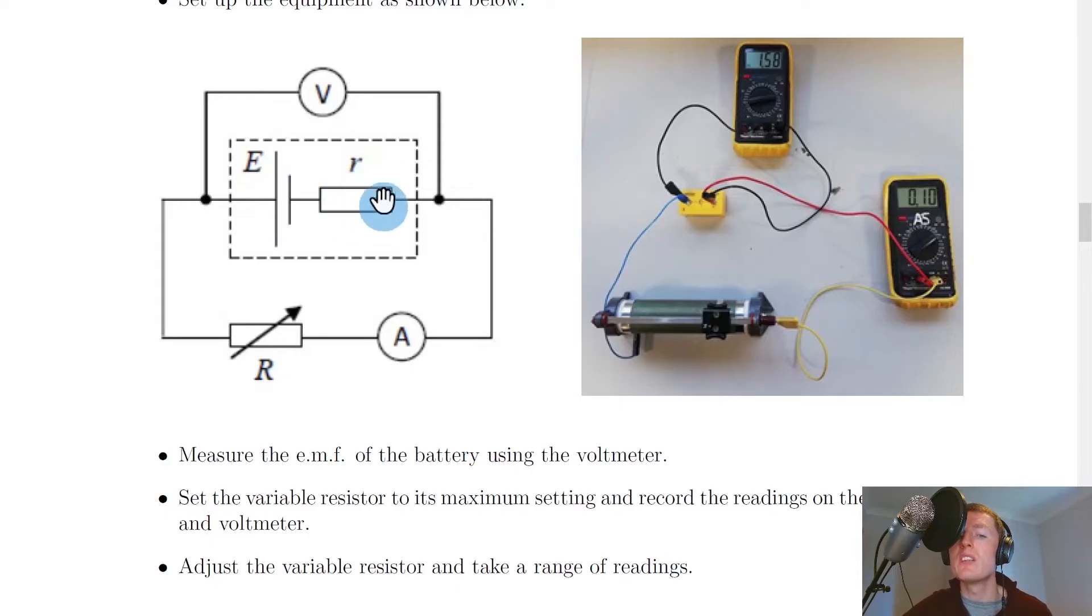So we've got our cell with its own internal resistance enclosed by the dashed box line. We've then got a voltmeter in parallel with that and then we've got a variable resistor in series with an ammeter as well. And that's shown here. So we've got our cell here, we've got our voltmeter in parallel with some wires, we've then got our ammeter and our variable resistor.